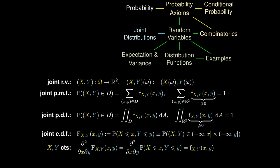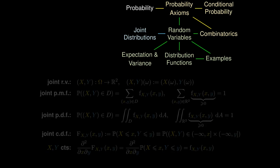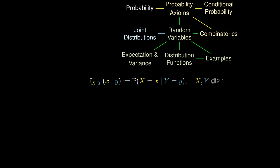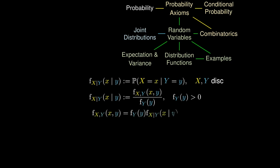Akin to conditional probability is the idea of conditional distributions, which follows a similar definition when X and Y are discrete. More generally, as long as the PMF or PDF of Y is positive, we can define the conditional PDF of X given Y. We can then do a bit of algebra to obtain the joint PDF in terms of the conditional PDF of X given Y.